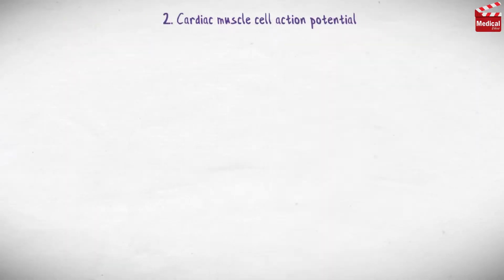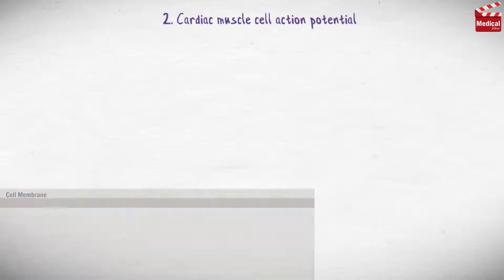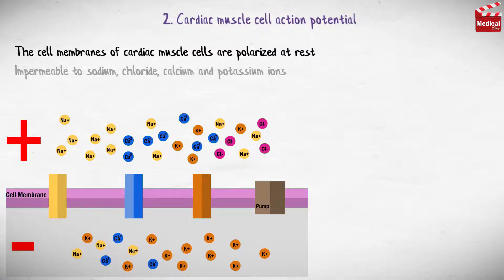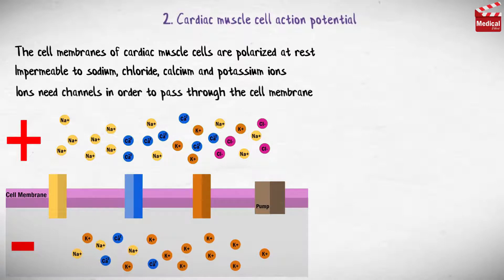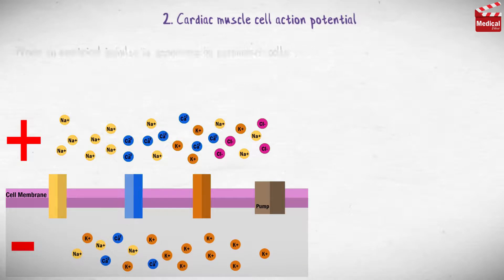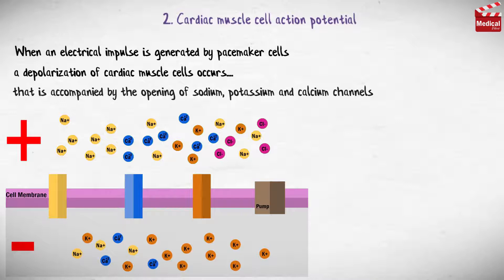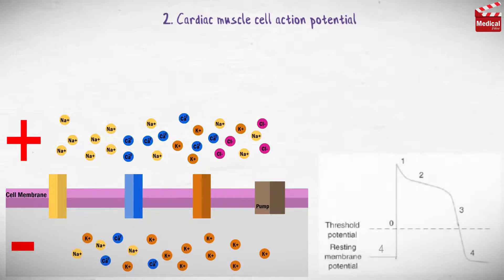Let's get deeper and talk about cardiac muscle cell action potential. The cell membranes of cardiac muscle cells are polarized at rest, which means there is more positive charge outside the membrane and more negative charge inside. The membrane is impermeable to sodium, chloride, calcium, and potassium ions, meaning ions need channels in order to pass through the cell membrane. When an electrical impulse is generated by pacemaker cells, depolarization of cardiac muscle cells occurs, accompanied by the opening of sodium, potassium, and calcium channels. This graph represents the change in membrane potential over time in milliseconds, and there are four phases. Threshold potential is the minimum depolarization required to initiate an action potential.